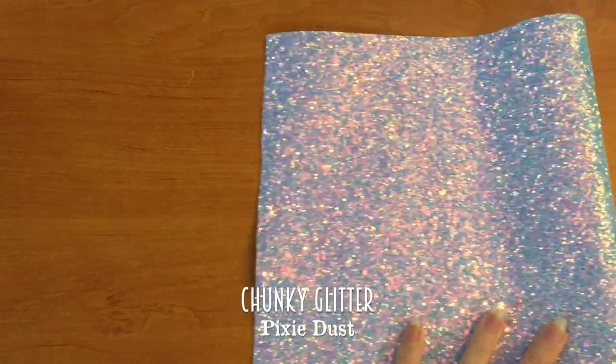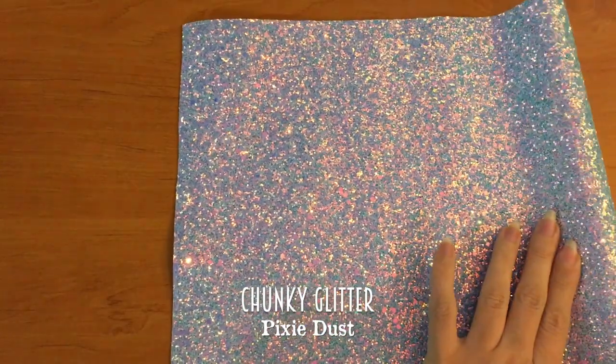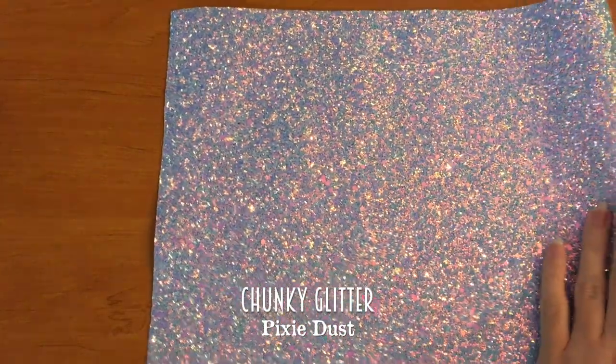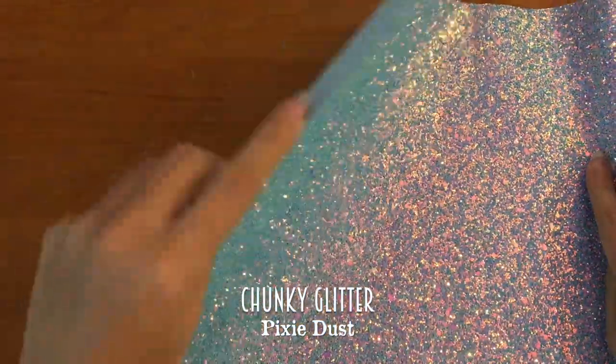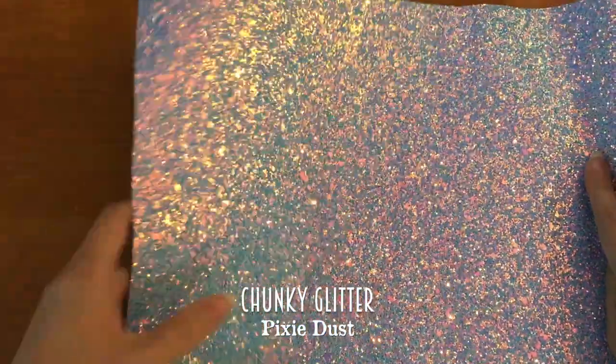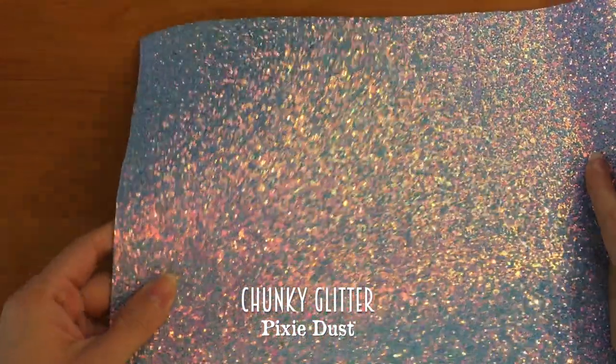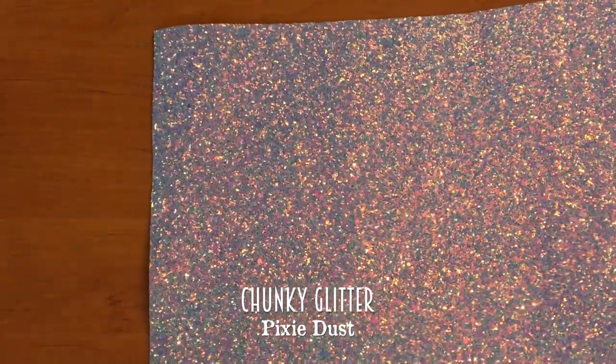And then the second subcategory of the chunky glitters which are the holographic ones. You have pixie dust. Which is a blue with pinks and purple reflections. And somewhat turquoise as well. It really depends on the light. As you can see it's always changing. I really like this one. I'm not much of a blue kind of person. But this one is. Yeah I had to have it.